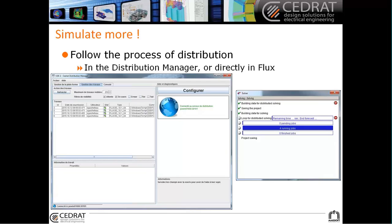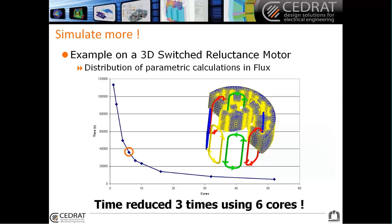You can see it's very easy and very fast. From some examples, you can see the time you can reduce in your computation. For example, if you look at this 3D switched reluctance motor, here you have the time of computation for a big parametric analysis, and here you have the number of cores used. You can see that using only 6 cores, you can reduce the time of computation by 3. So maybe staying on your own machine, you can reduce the computation time significantly.